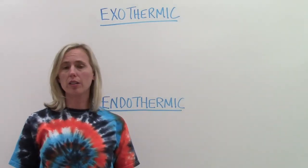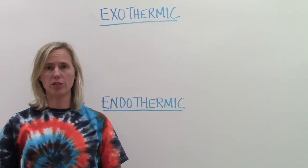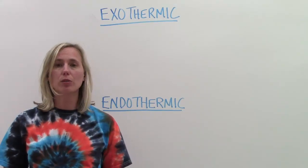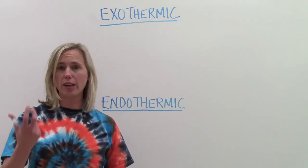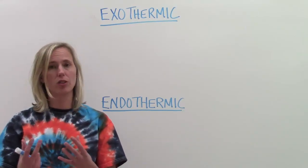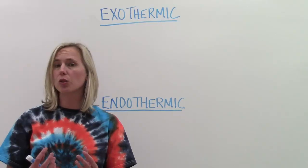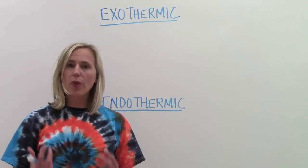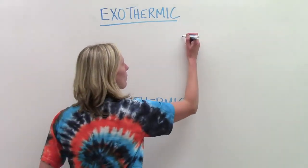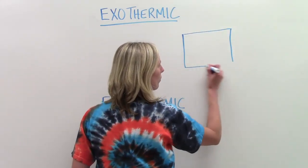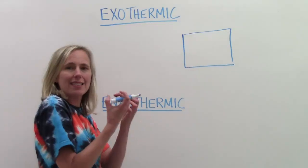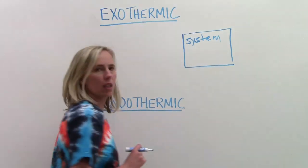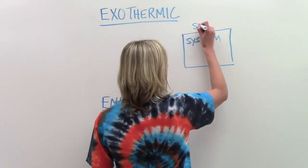When we talk about heat and chemistry, there are two words that you need to understand. One of them is the system and the other is the surroundings. Think about a chemical reaction going on in a test tube. You've got your chemicals mixed together and a chemical reaction is occurring. This is the system. The surroundings are everything outside of the test tube — the air, the glass. We might draw a box to represent what's going on inside that test tube. This is the system; everything outside is the surroundings.